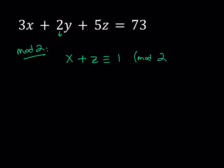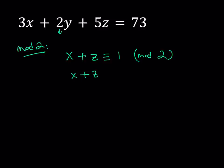So 5z is just going to be z. And 73, when you reduce it mod 2, it's just going to be 1 because it's an odd number. So we can write it as a congruent statement. x plus z is congruent to 1 mod 2. Of course, we have to state the mod here. Now, what is that supposed to mean? It means that x plus z leaves a remainder of 1 when divided by 2.